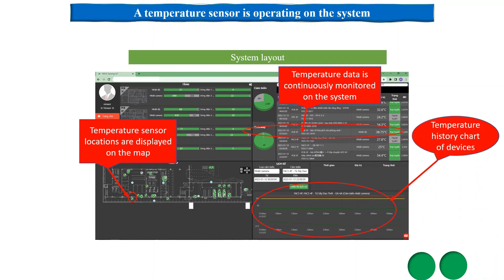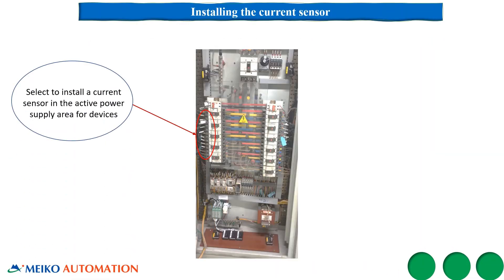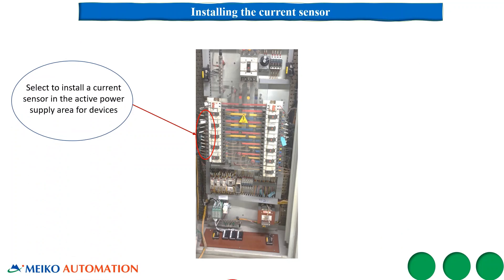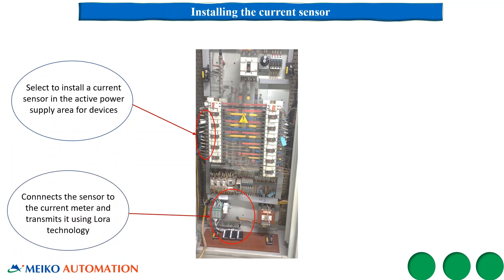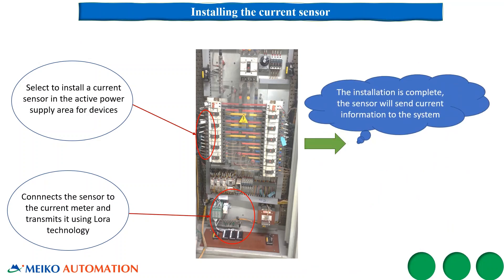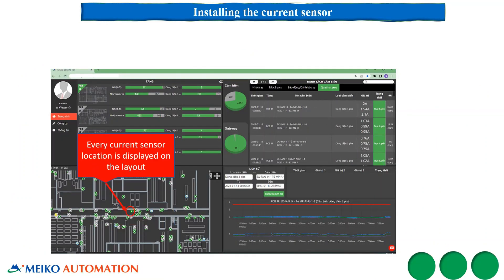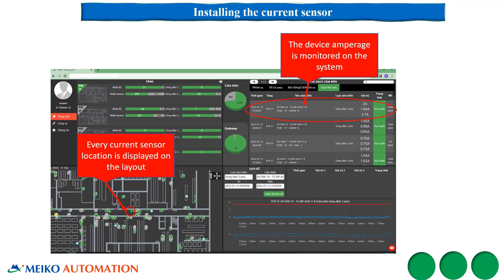Users can monitor device temperature history in the form of visual graphs. Next, we move on to the installation of the current sensor. Install the current sensor at the device that needs to monitor the amperage. Once installation is complete, the amperage data will be sent to the monitoring system and continuously monitored. Users can check the amperage history through visual graphs.